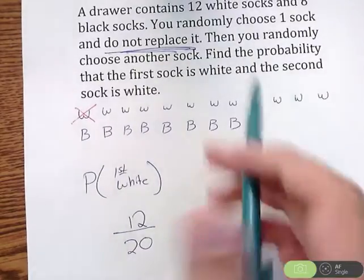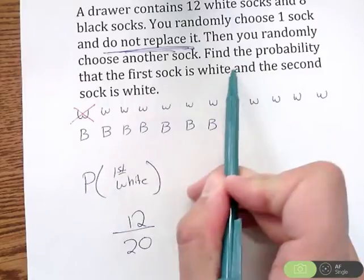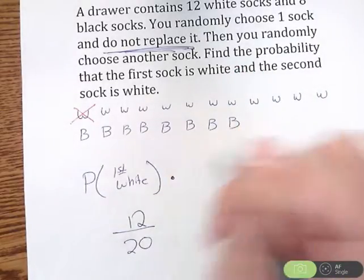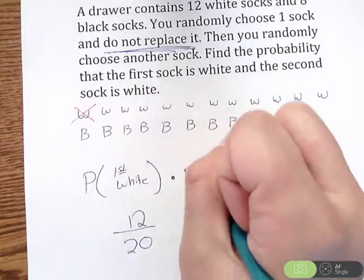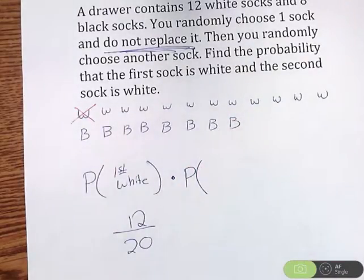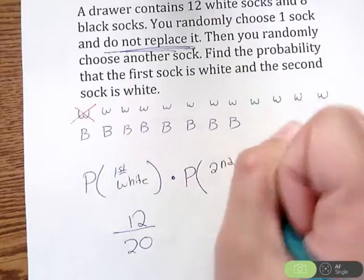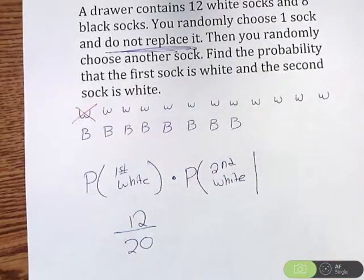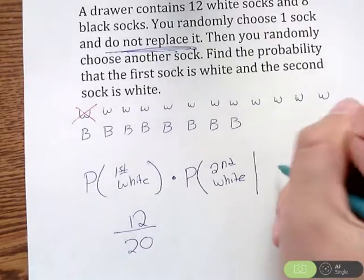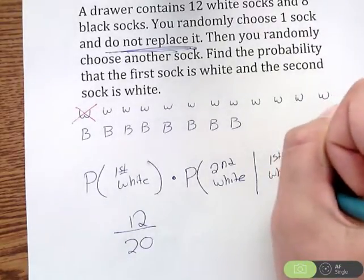So let's move on to the second part. Find the probability that the first sock is white and the second sock is white. But here's the deal. We're going to find the probability that the second one is white, but given—that's what this slash means—given that we already pulled the first white out.